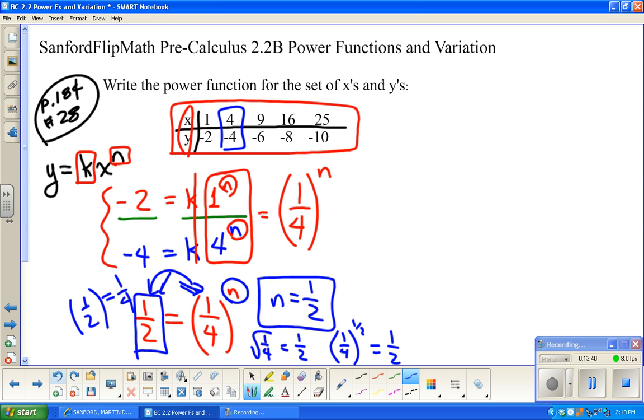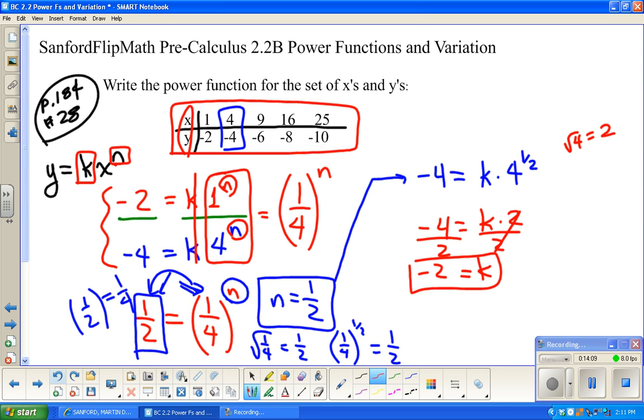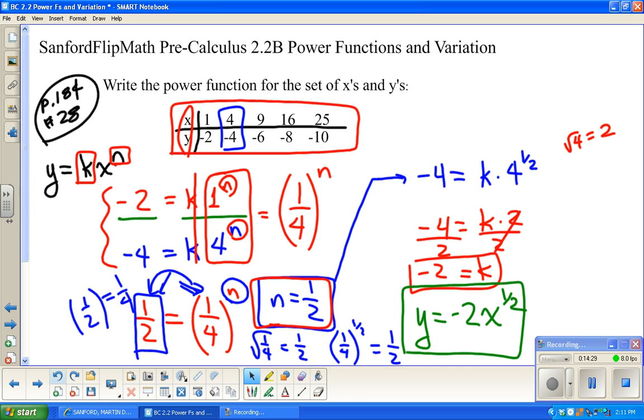If n is 1 half, then I should be able to take that 1 half and put it in. So, negative 4 equals k times 4 to the 1 half. 4 to the 1 half is the square root of 4, which is 2. So, negative 4 equals k times 2. If I divide both sides by 2, k equals negative 2. The equation ought to be y equals negative 2 times x to the 1 half.